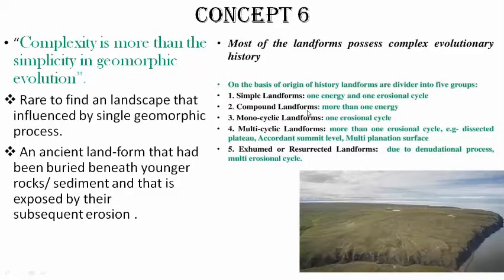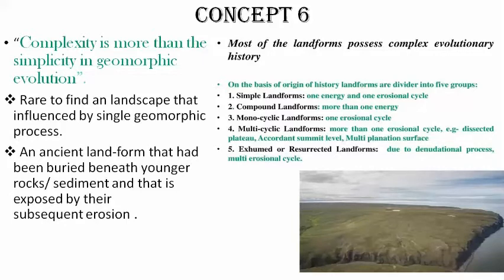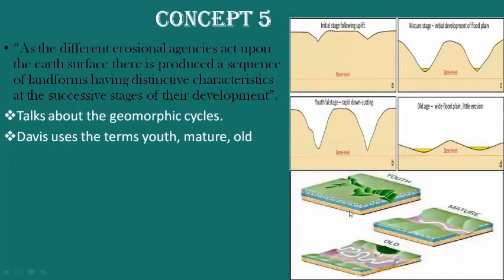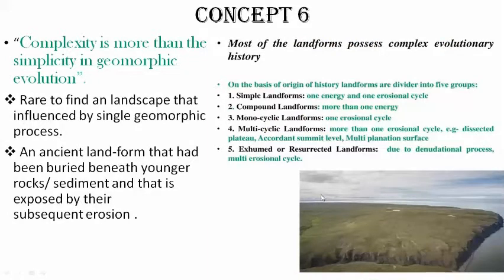Monocyclic means only one erosional cycle; multicyclic means more than one erosional cycle. In a multicyclic landform, after a place has gone through youth, maturity, and old age and reached base level, that place is uplifted again, and the cycle continues again. Looking at a river valley example, after it has eroded to old age, it becomes uplifted again, and the cycle repeats.